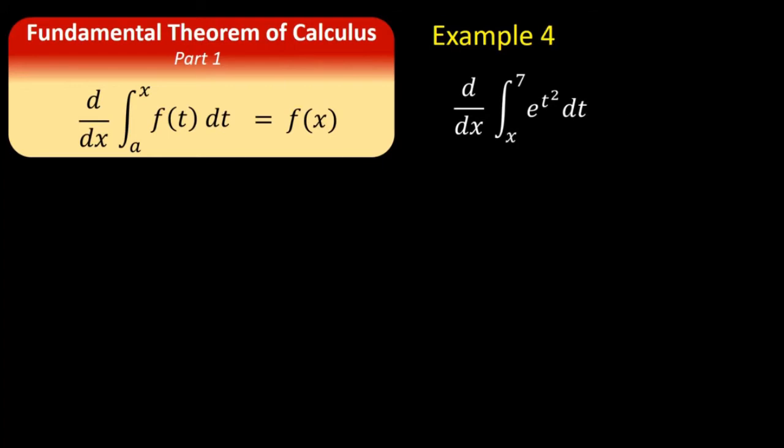Now, this one is different because, while the upper limit is constant, the lower limit is x. So, the answer in this case is the negative of e to the x squared. And, the reason for that negative is that when you switch the limits of integration, a minus sign comes out of the integral, as we've discussed on a previous video. And, then, applying the fundamental theorem, Part 1, you just get minus e to the x squared for the answer.